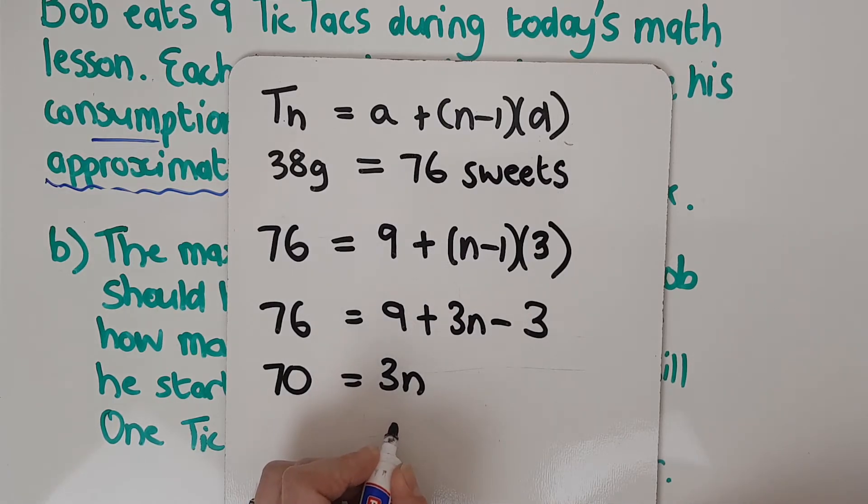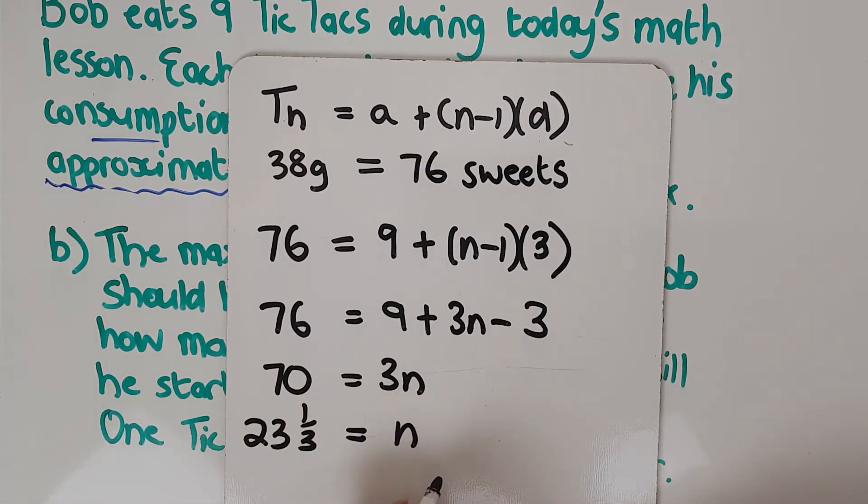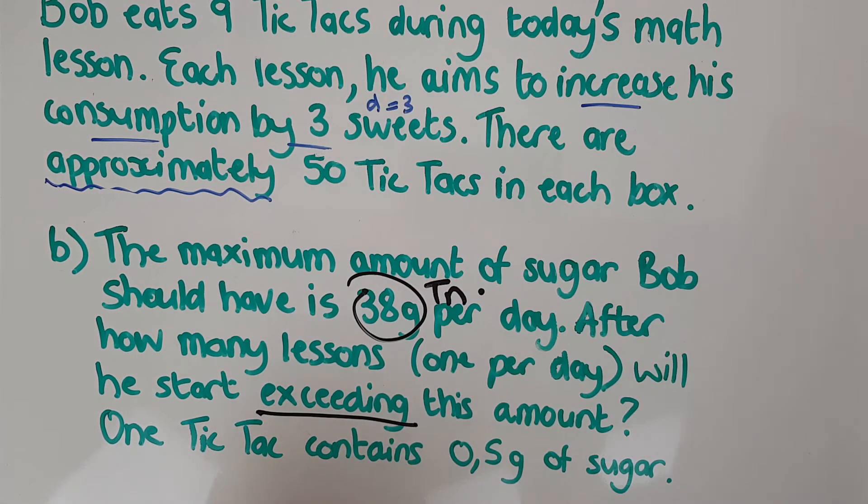Again, I'm going to get n. If I divide both by 3, I actually get 23 and a third. Again, not supposed to be allowed. But the question said, when will he exceed?